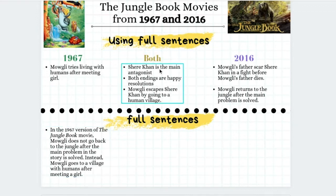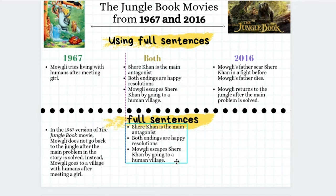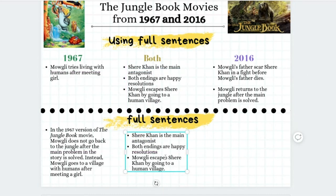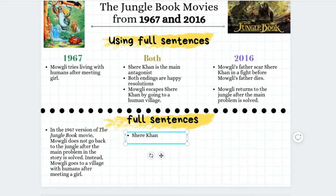We're going to try to convert the sentences in the 'both' column to full sentences as well. The first one says 'Shere Khan is the main antagonist.' This gives us information based on what we know, but let's again pretend that the reader has no idea. So we need to introduce Shere Khan in a short way.